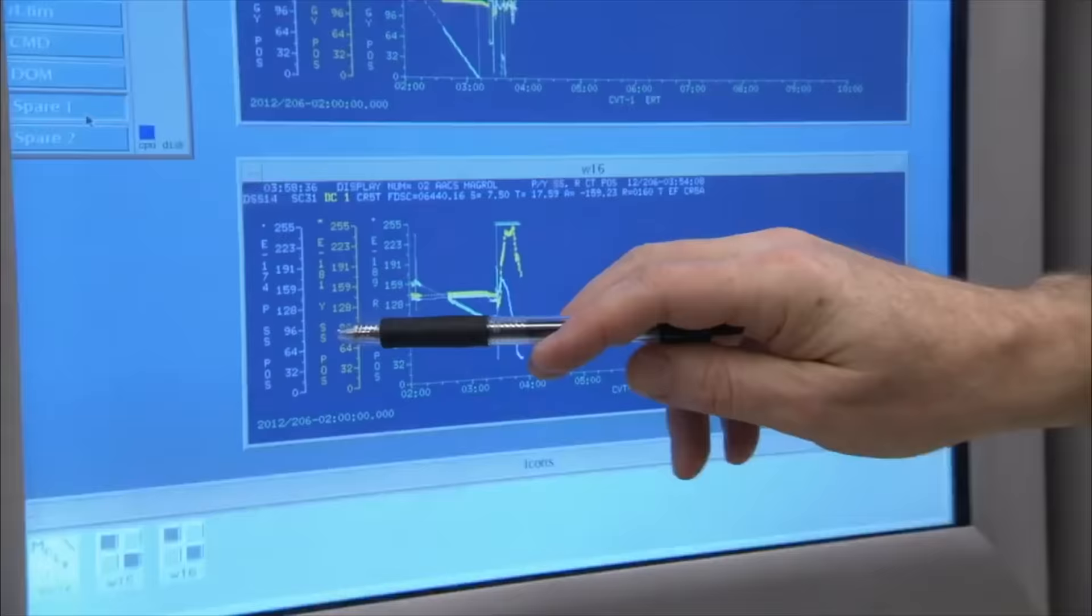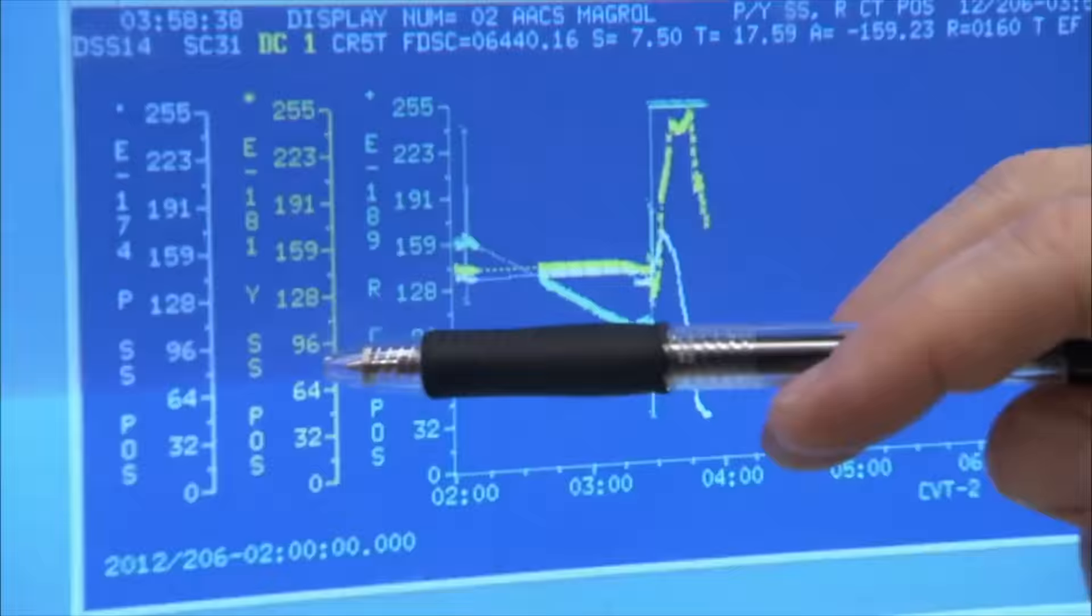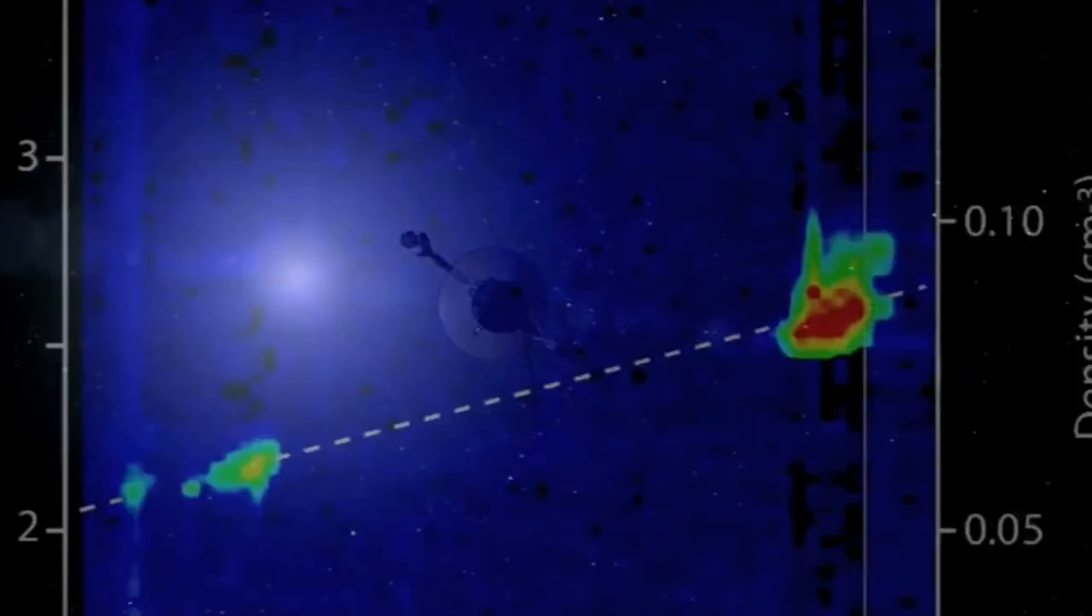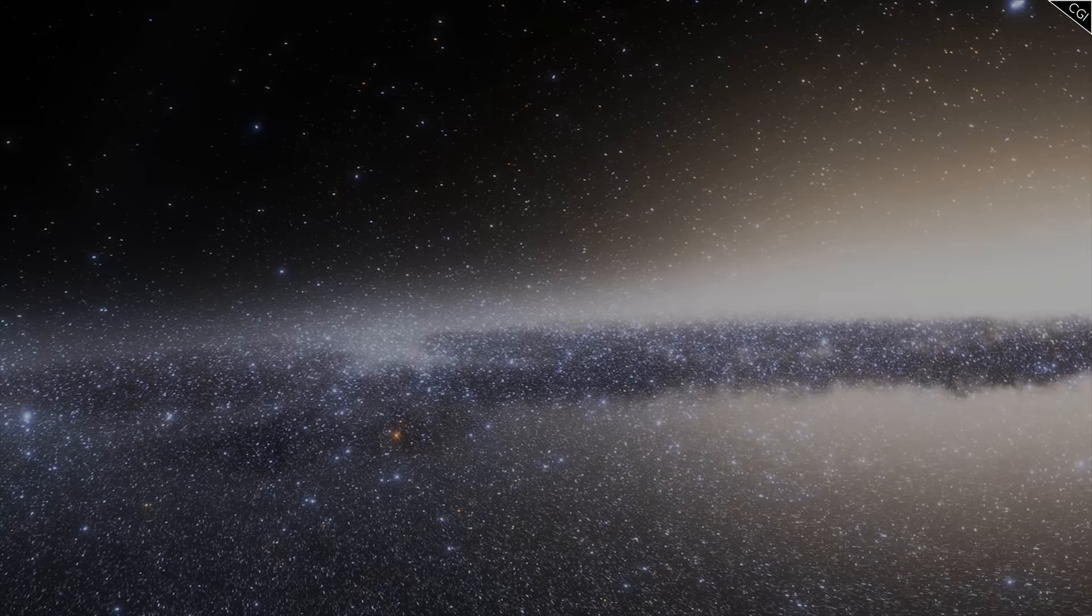Although at the time NASA scientists scrambled to figure out what was going wrong with Voyager 1, it took them months to find out the answer. And there is still some mystery to what happened. Let's see those events through their eyes, as we ask, can you solve the mystery of Voyager 1?